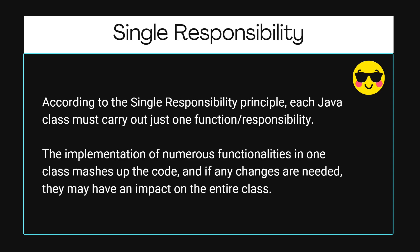The implementation of numerous functionalities in one class meshes up the code. If a developer is trying to modify the code, there could be at least one change in your class because you have more than one kind of functionality. So if any changes are needed, we may have an impact on the entire class — that is what Single Responsibility means.